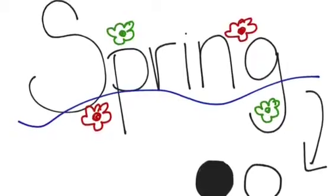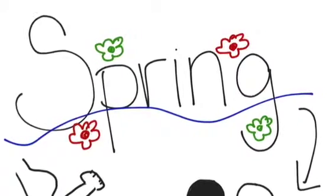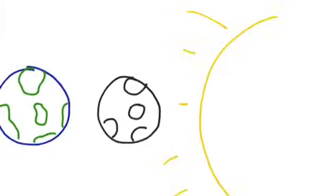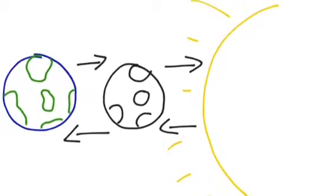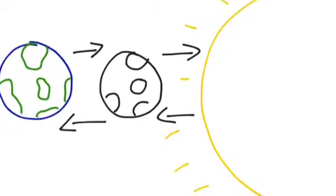Spring tides occur during the full moon and the new moon. They are the strongest tides because they occur when the Earth, the sun, and the moon are in line. The gravitational forces of the moon and the sun both contribute to the tides.